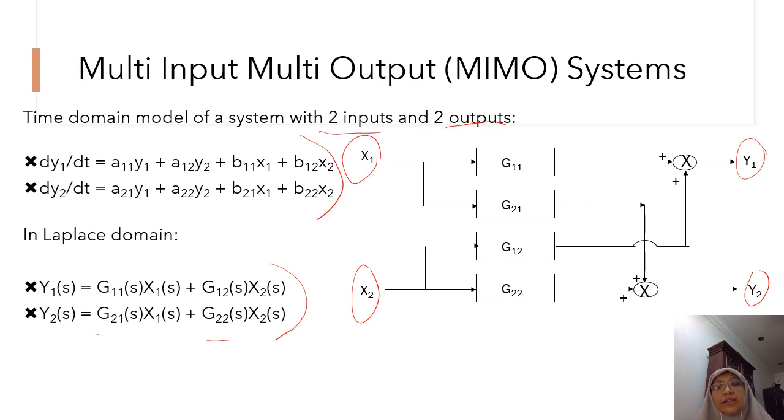But it doesn't mean that we are ignoring them. We can get them one by one and represent the total effect in a block diagram. Now, you can see that G11 is actually the transfer function that relates Y1 to X1. G21 is the transfer function that relates Y2 to X1. And G12 is the transfer function that relates Y1 to X2. And G22 is the transfer function that relates Y2 to X2. So, this is how you can represent the whole system in the form of block diagrams.